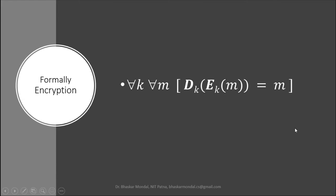Formally, the whole system can be represented as: for all possible keys K and for all possible messages M, applying the decryption algorithm DK to the output of the encryption algorithm EK of M gives back the original plaintext M.